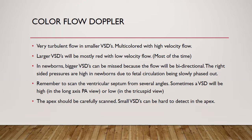Remember to scan the ventricular septum from several angles. Sometimes the VSD will be high in the long axis PA view, or low in the tricuspid view. You have to scan the septum in all three areas: the regular long axis, the PA view, and the tricuspid view — all in the long axis. Move methodically up and down with your color flow to detect any shunt that's there.